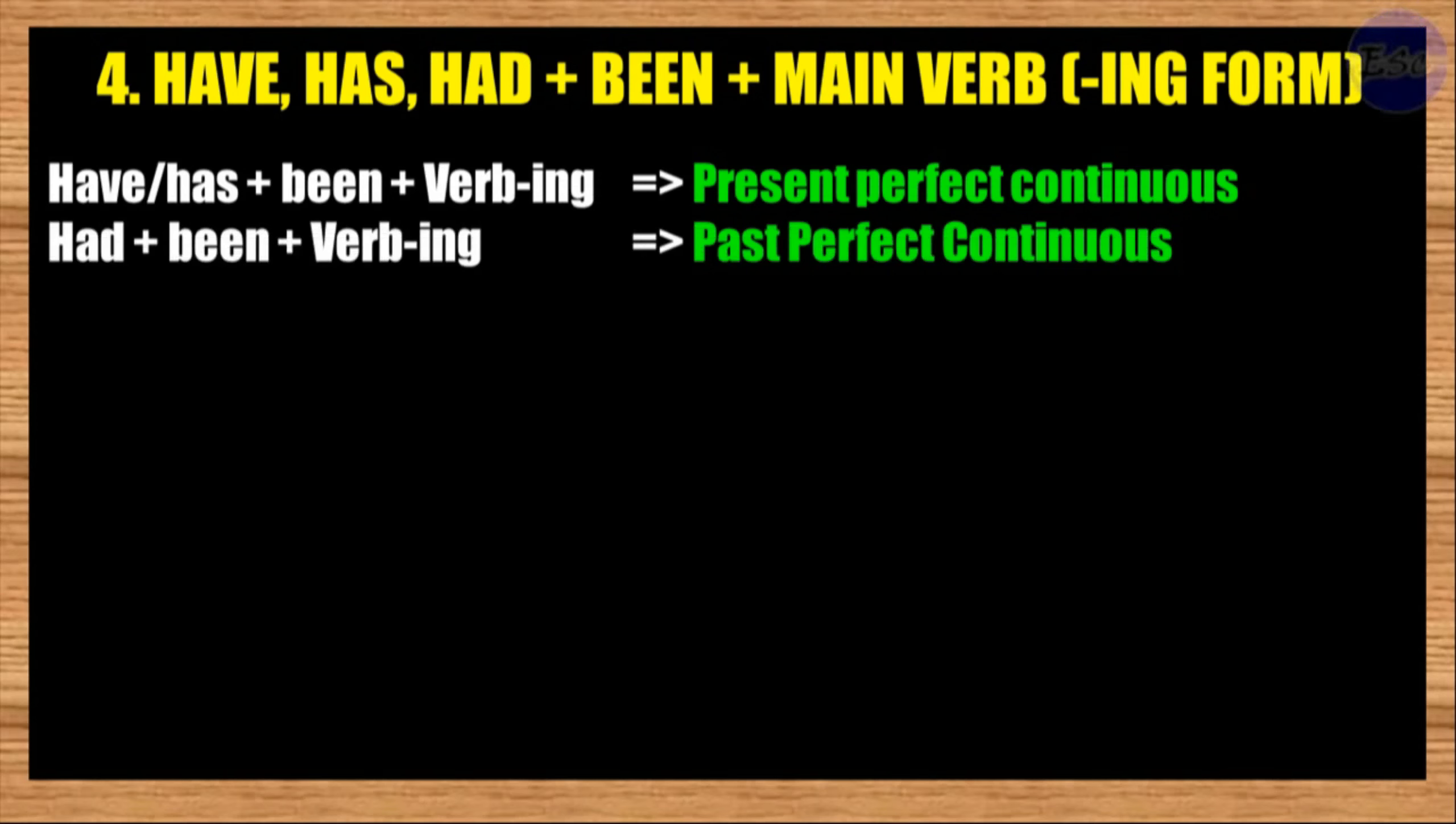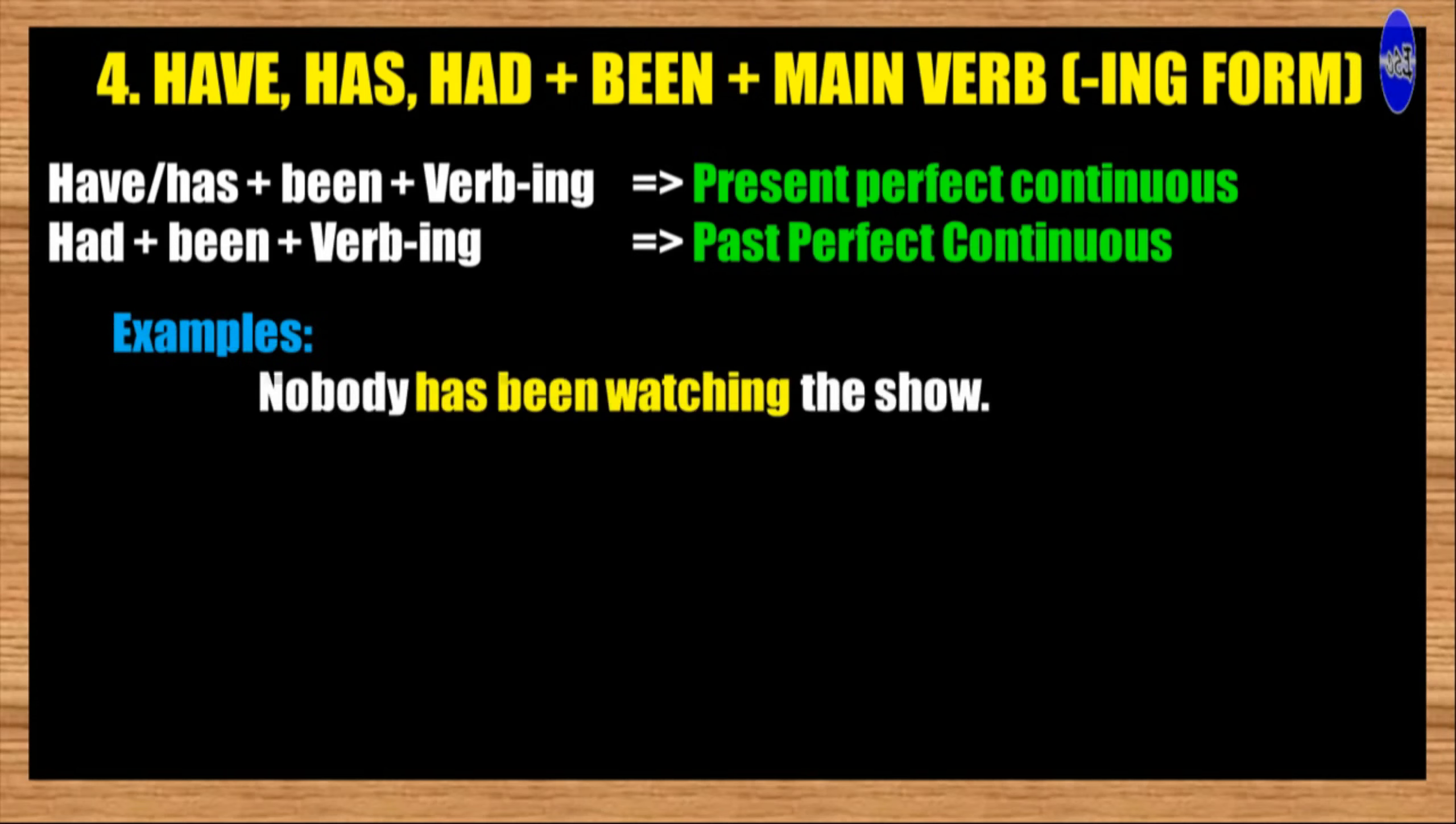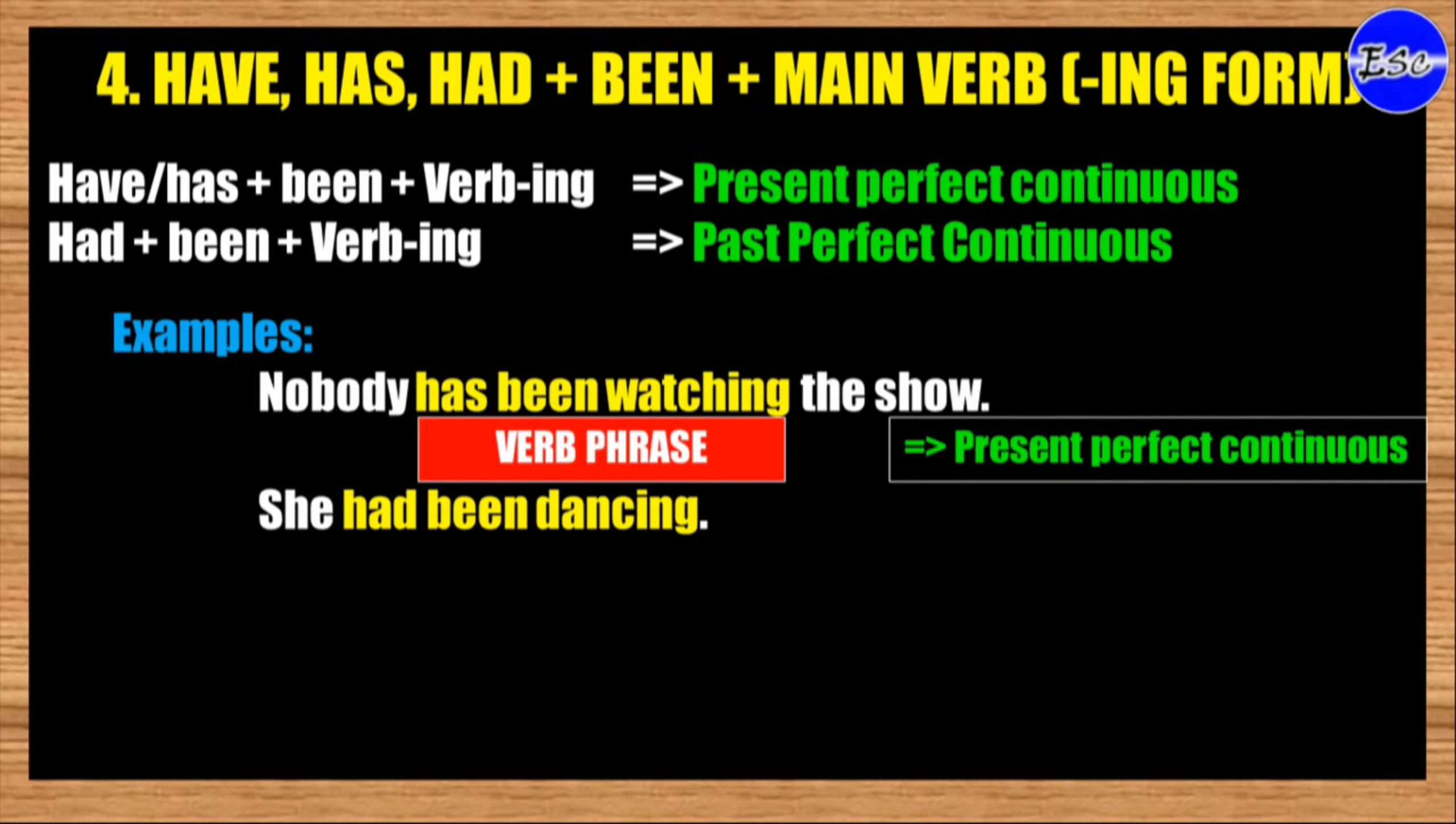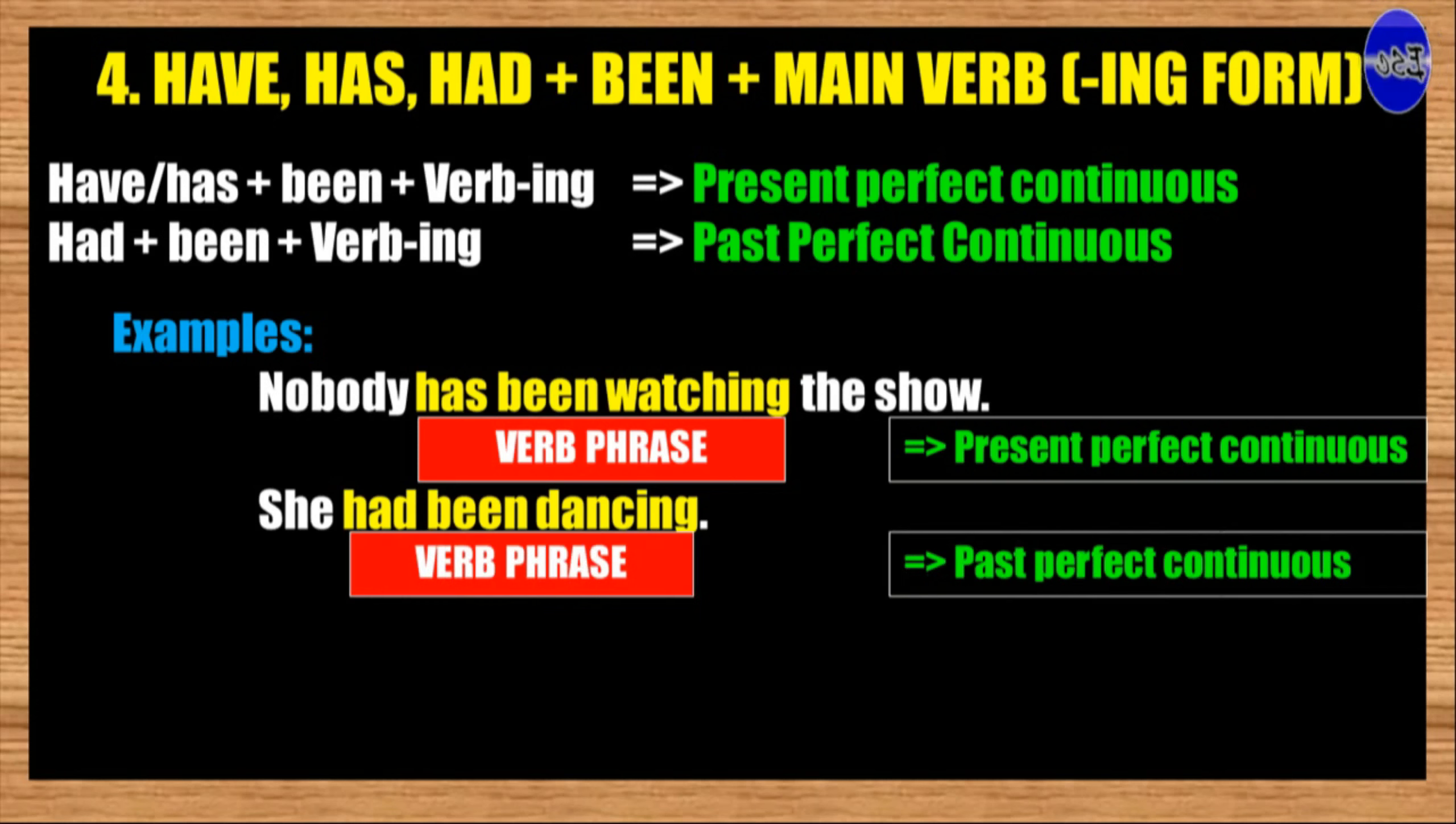Examples: Nobody has been watching the show. She had been dancing. In the example, 'nobody has been watching the show,' the verb phrase is 'has been watching.' And, the tense mood or aspect is present perfect continuous. While, in the sentence, 'she had been dancing,' the verb phrase is 'had been dancing.' And, this is in the form of past perfect continuous.